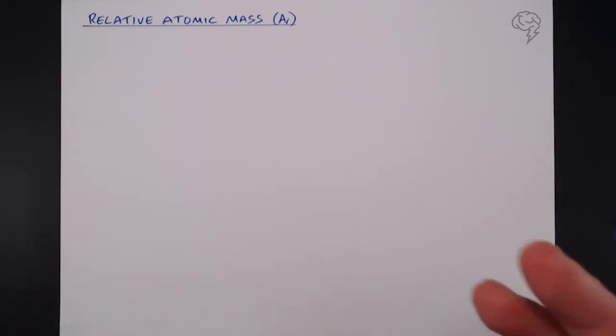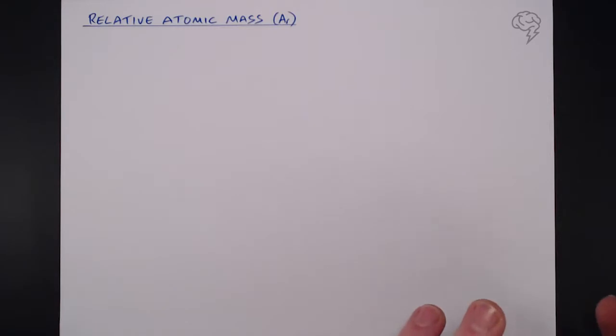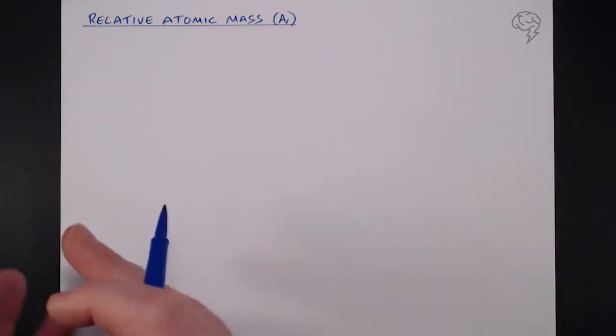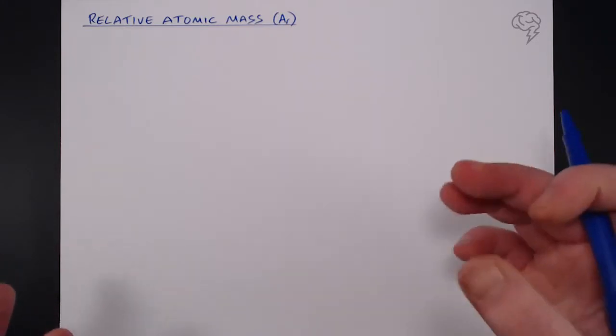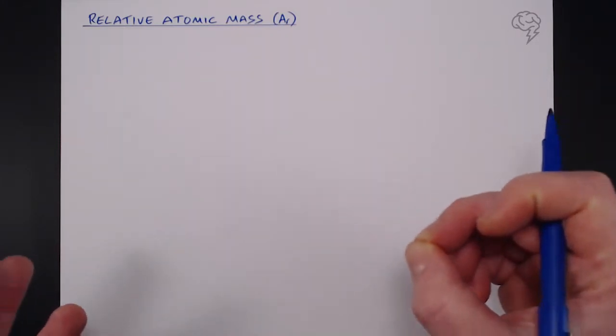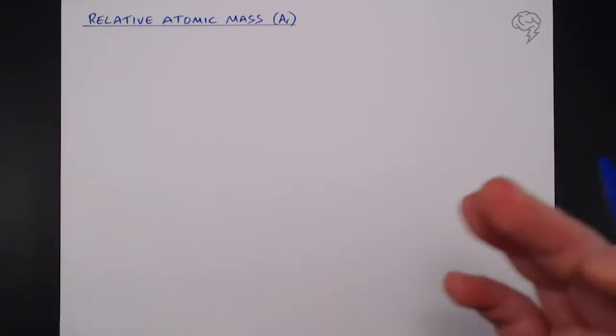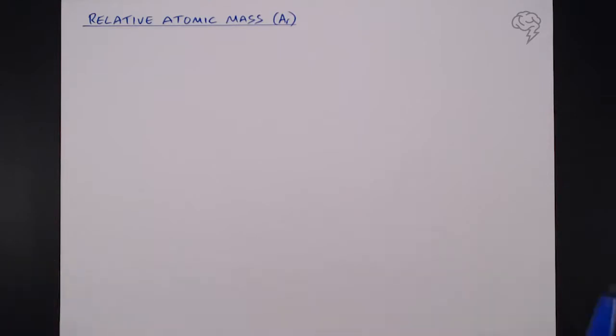Now, Relative Atomic Mass deals with the fact that in the periodic table, you've got some really heavy elements and you've got some really light elements. So the atoms of these elements do have different masses. Of course, a single atom of an element is really difficult to weigh. It's really small. There's no way you're going to be able to measure it in grams, for example. So we need to look at individual atoms here and their masses.